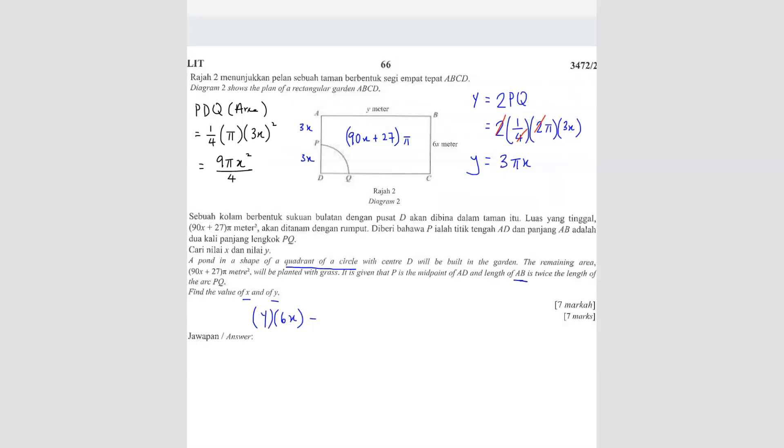So I'm just going to write straight away, 9 over 4 πX square, and then equals to 90X plus 27π. So I'm basically forming an equation using the area given here. So we have to substitute the Y. Y equals to 3πX. So 3πX multiplied by 6X, I will get 18πX square minus 9 over 4 πX square equals to 90X plus 27π.